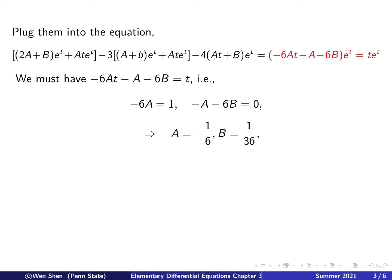Since the exponential term is never zero, we can drop it and compare coefficients. For the coefficient of t: -6A = 1, giving A = -1/6. For the constant term: -A - 6B = 0, so plugging in A gives B = 1/36. Two unknowns and two equations, easily solved.